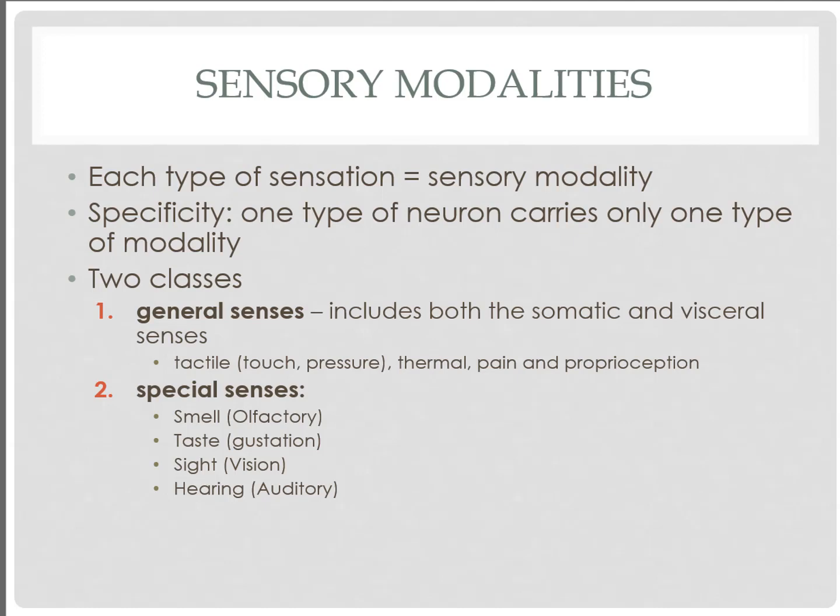The next thing are special senses, which we'll talk about in the latter portion of this lecture. Our special senses come specifically from very specific organs such as our eyes, our ears, and the taste buds on our tongue, to receive specific sensory information.